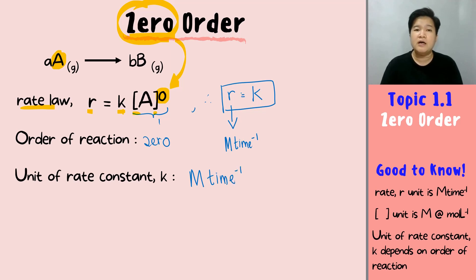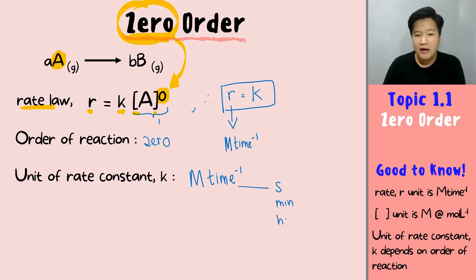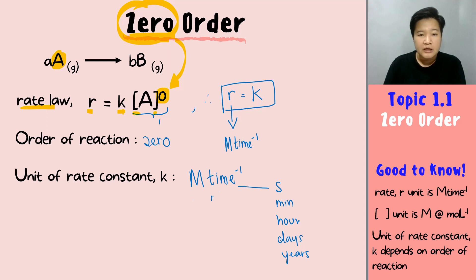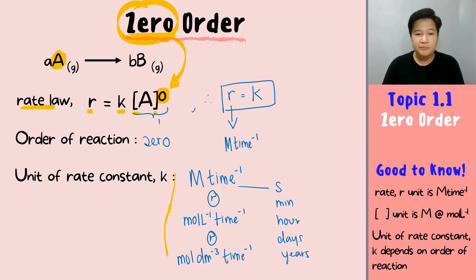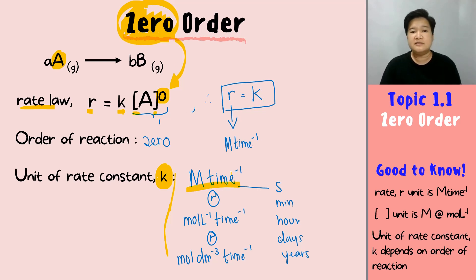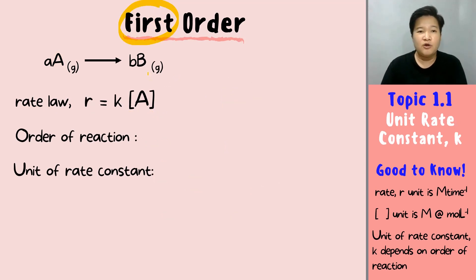Time can be in many units — seconds, minutes, hours, days, years, and so on. So the unit of k for zero order can be written as M/time, or mol/L/time, or mol/dm³/time — these all represent the same thing. For zero order, the unit of the rate constant must be molar per time.